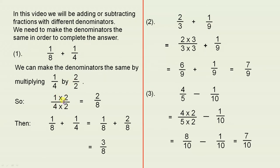So if we take 1 over 4 and we multiply it by 2 over 2, 2 times 1 is 2 and 2 times 4 is 8, we get 2 over 8.